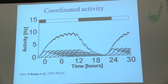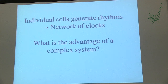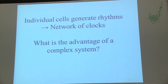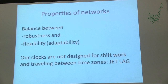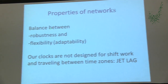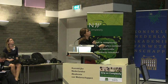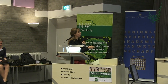It is the coordinated activity of many cells that produces this rhythm. So we have a network of clocks — individual cells generate rhythms, but together they form a network. We can then ask: what is the advantage of this complex network in which different elements are all able to produce 24-hour rhythms but do so slightly out of phase?